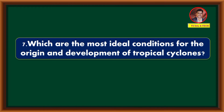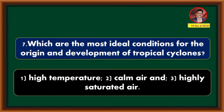What are the most ideal conditions for the origin and development of tropical cyclones? High temperature, calm air, and highly saturated air are the most ideal conditions for the origin and development of tropical cyclones.